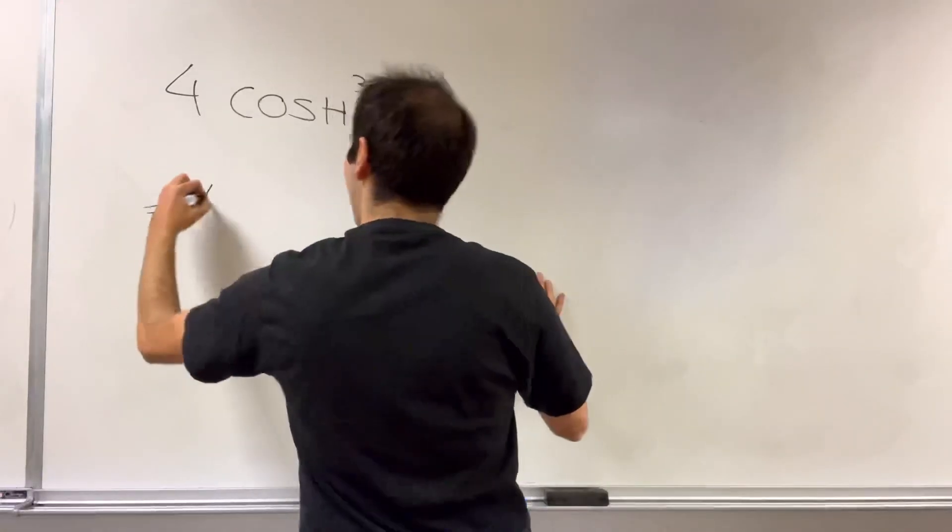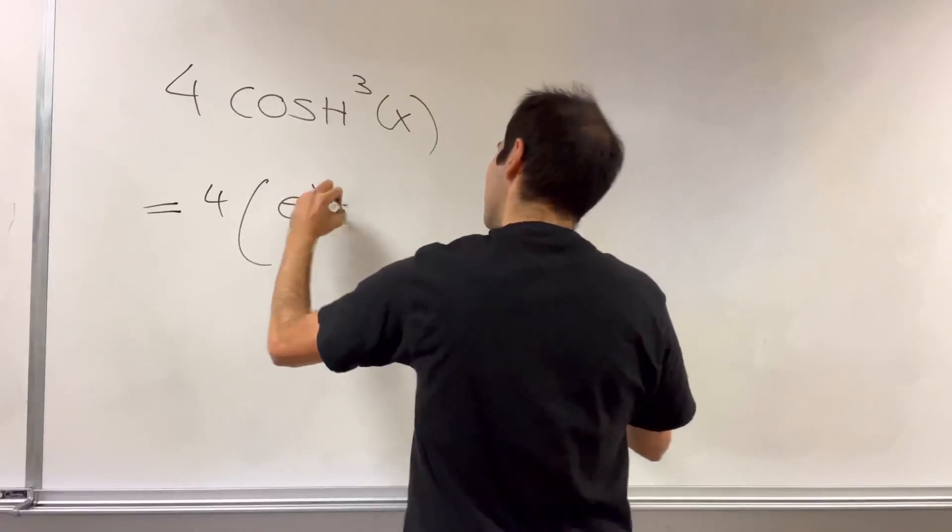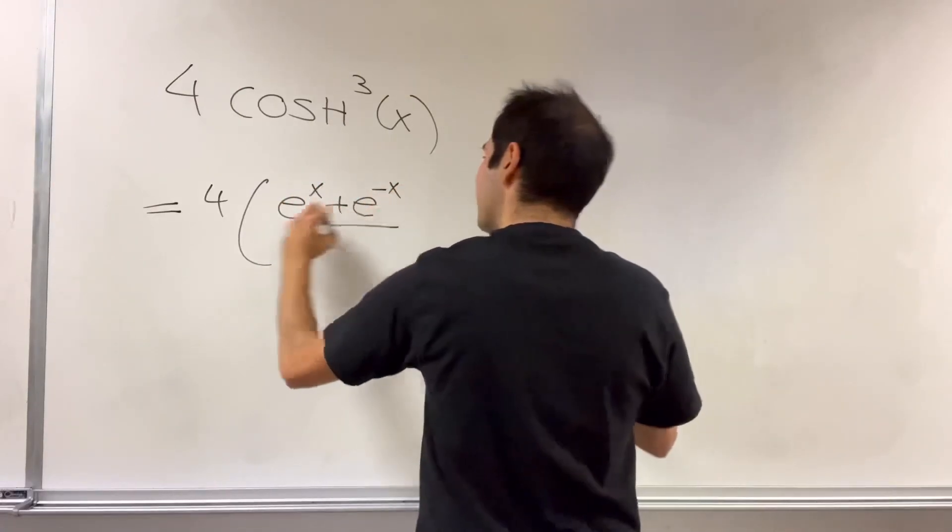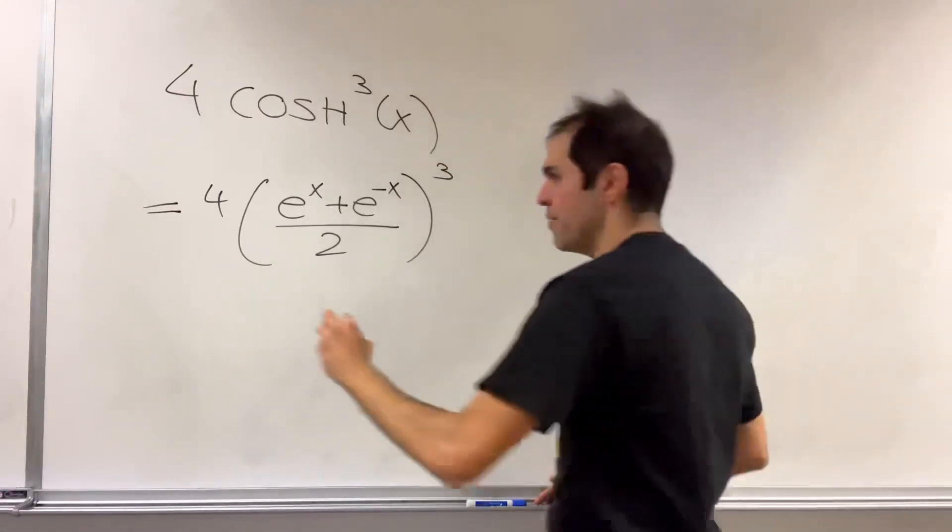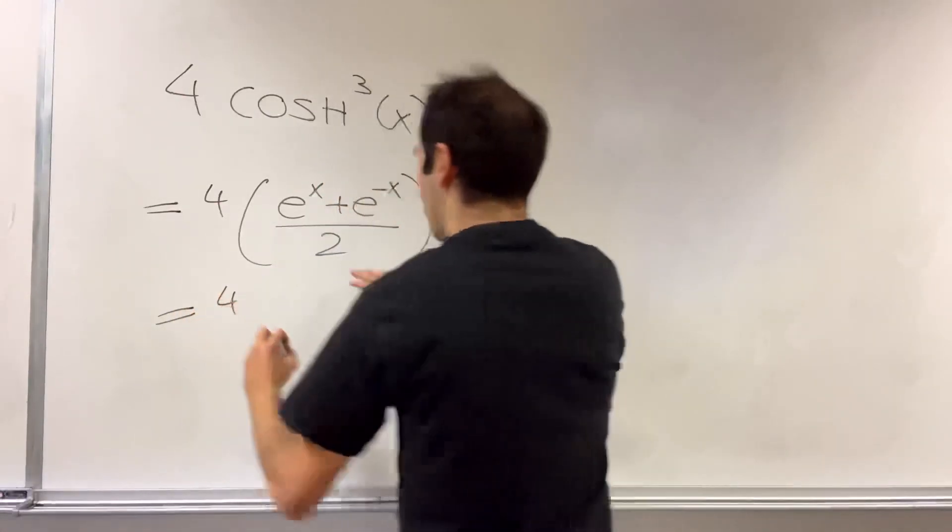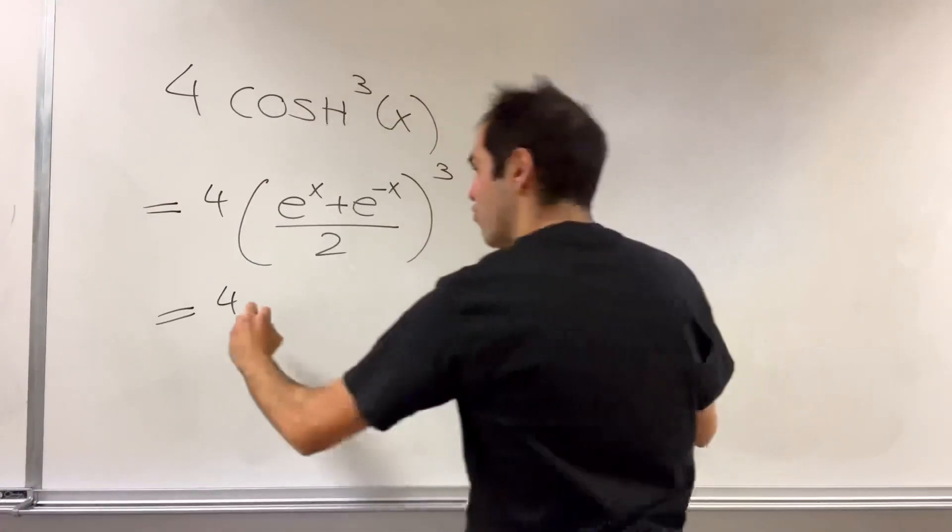Because what is cosh is just e to the x plus e to the minus x over 2. And you're cubing this, so it's the same thing as 4 over 2 cubed, so 4 over 8.